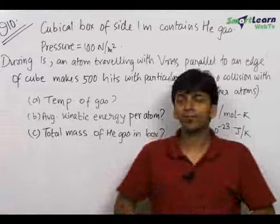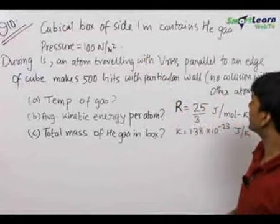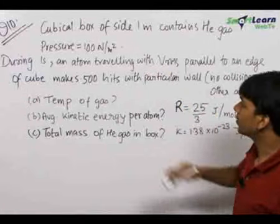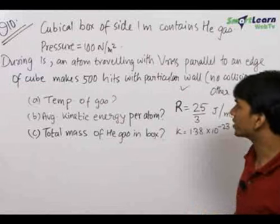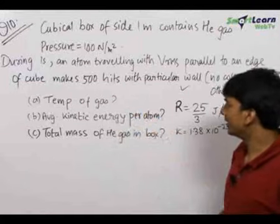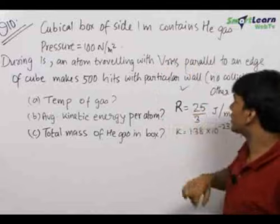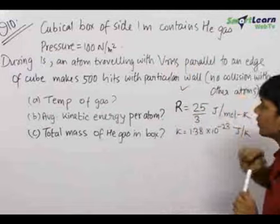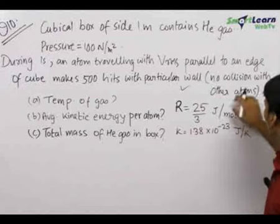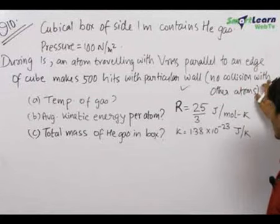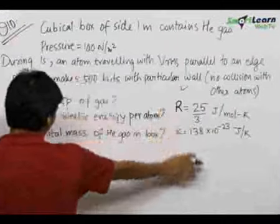In the 10th question, we have been given a cubical box of side 1 meter that contains helium gas. The pressure of the gas is given, and during 1 second, an atom travelling with rms speed parallel to one of the edges of the cube makes 500 hits with a particular wall with no collision with other atoms. The values of R and k are also given.